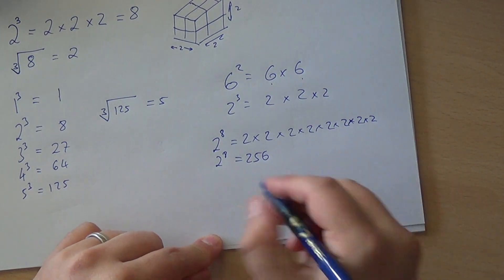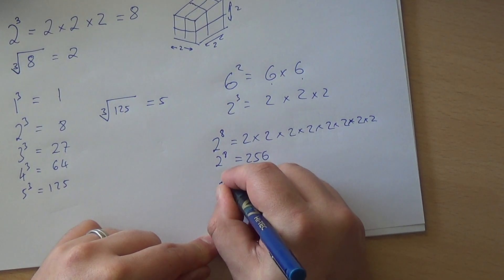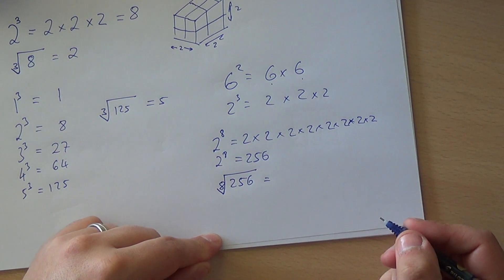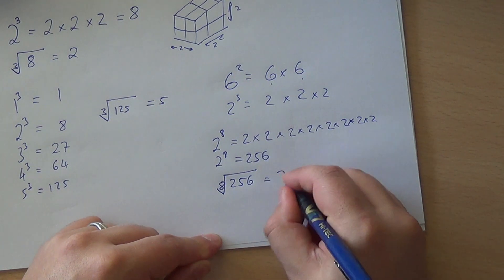And just like there are cube roots, there is an 8th root. The 8th root of 256 is whatever number multiplied by itself 8 times gets you 256. Well, we've just worked it out—we know it's 2.